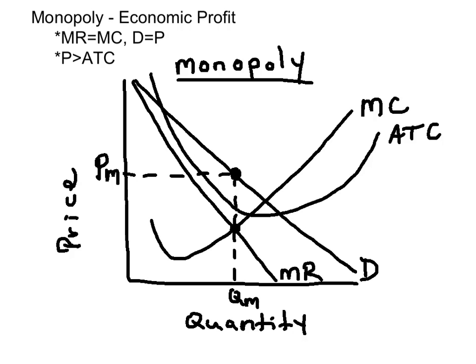When drawing a monopoly firm, I recommend starting with the demand curve and then the downward sloping marginal revenue curve underneath, followed by the marginal cost curve. When drawing in your ATC, you want to make sure you have a U-shaped curve, but the ATC must be at its minimum when it intersects the marginal cost, and then rises.